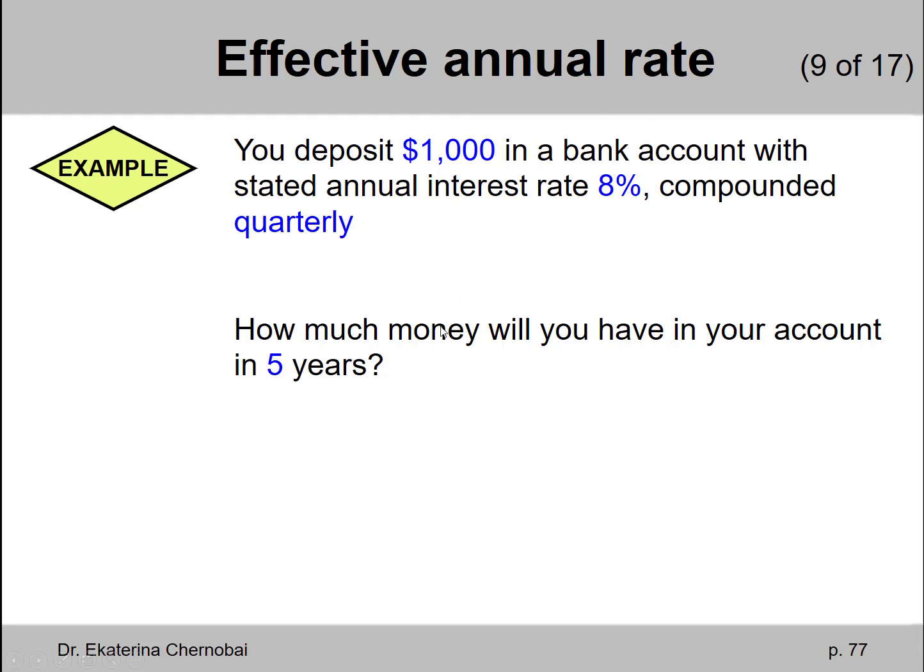So how should we solve this problem? The first step, we calculate like by how many percent per year does your money really grow when we account for the quarterly compounding. And it's going to be a little bit more than 8%.